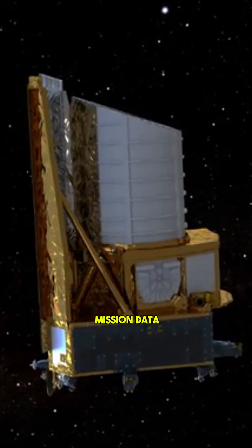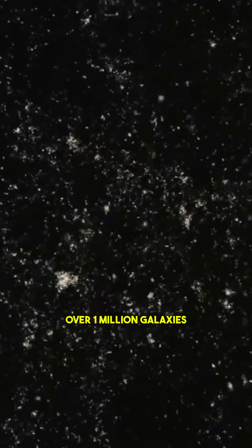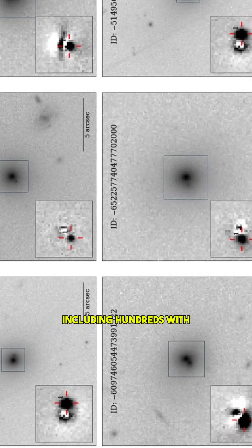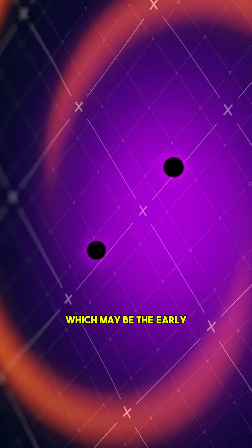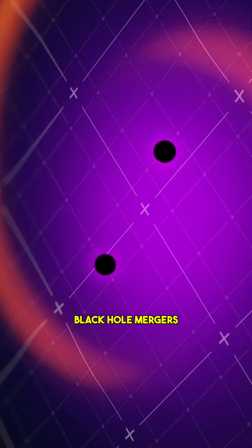In just 0.5% of its mission data, Euclid identified over a million galaxies, including hundreds with secondary nuclei, which may be the early stages of supermassive black hole mergers.